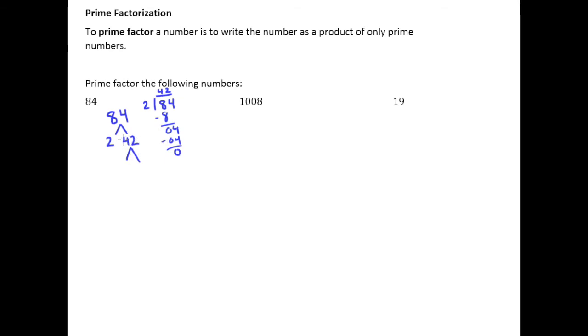Now 42 you should recognize as a special product. That is 6 times 7. Now 7 is a prime number. Only 1 and 7 go into 7 evenly, and so we'll stop our tree there. But 6 is not prime. It's composite. So we keep our tree going from 6. And so of course 6 is 2 times 3. We've already talked about how 2 is a prime number. We also know that 3 is a prime number. And so what we have now is 84 broken down into just a bunch of prime numbers.